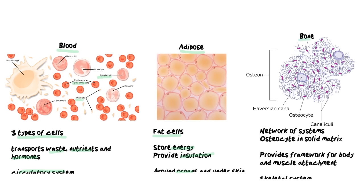Last but not least in the connective tissues is bone. Bone is made up of a network of systems — circular structures called Haversian systems, which are cylindrical concentric circular structures that give bone its ultimate structure and function. Our osteocytes are the cells that make up bone, and they secrete the solid matrix that sits around them. Those long outgrowths are how they secrete out the solid bone matrix. Bone provides a framework for your body and also allows for muscle attachment. We find it in the skeletal system.